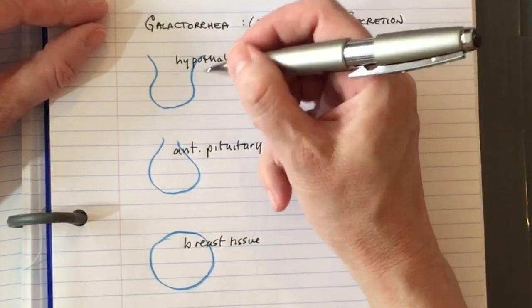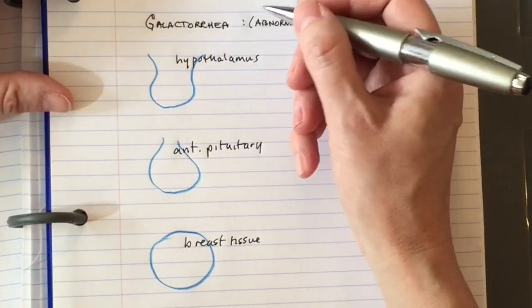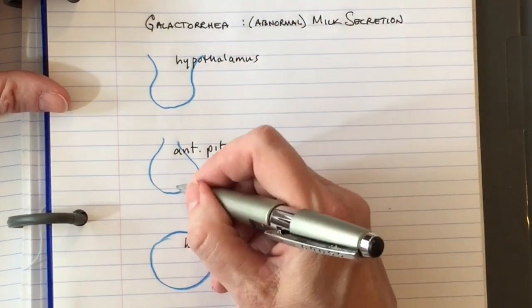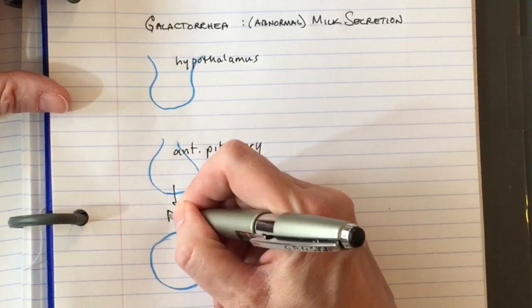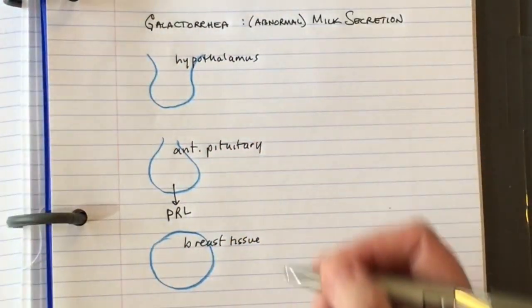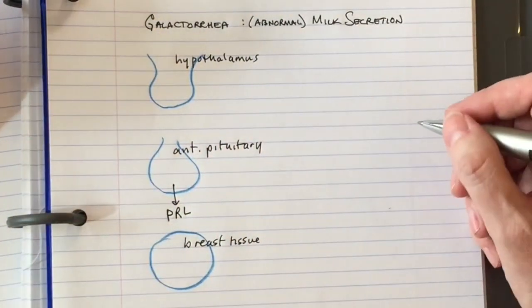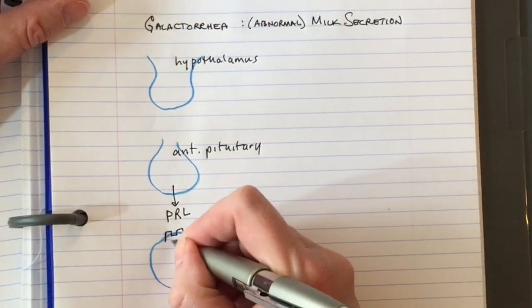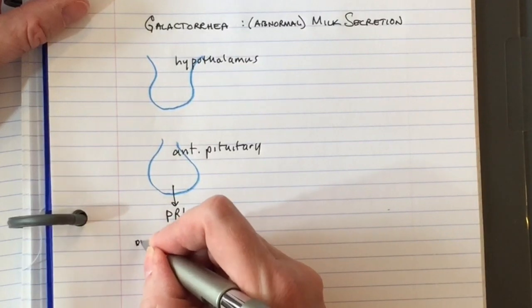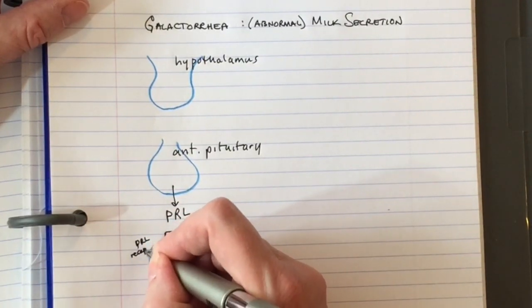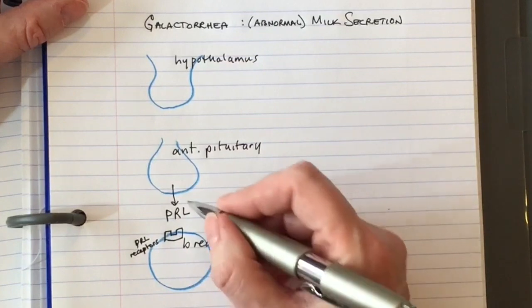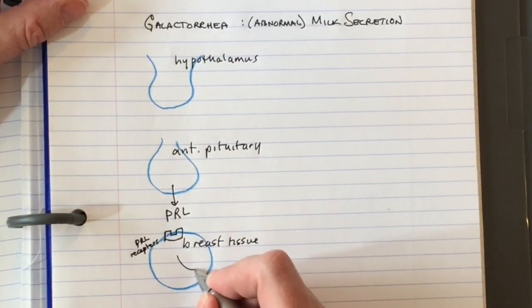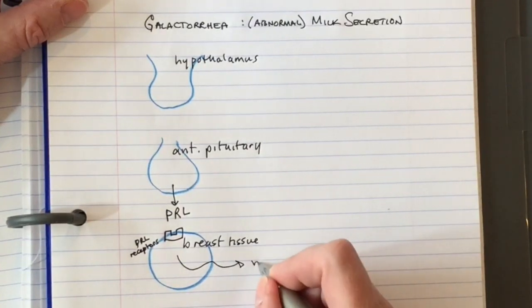Normally the hypothalamus makes two things that regulate prolactin production. There's prolactin. Prolactin binds prolactin receptors on breast tissue, which causes milk secretion.